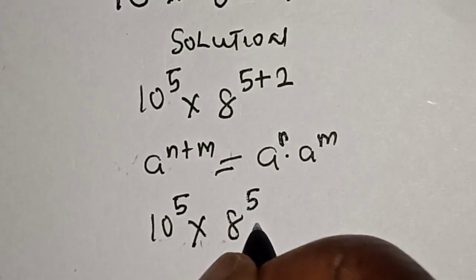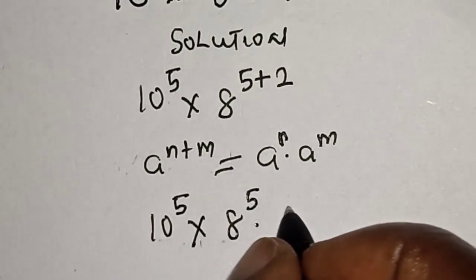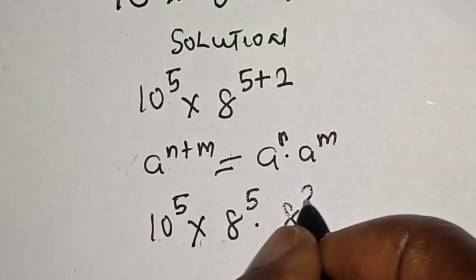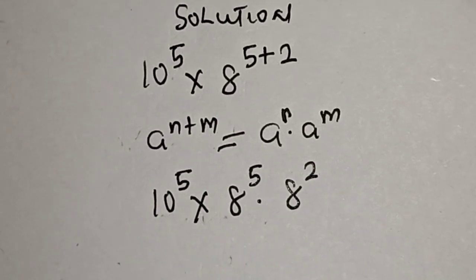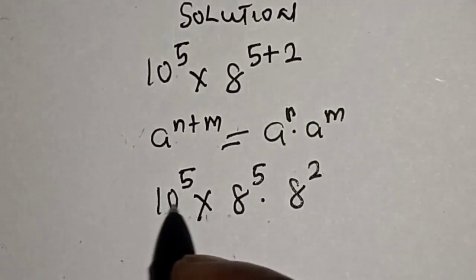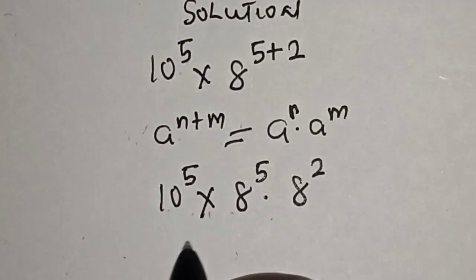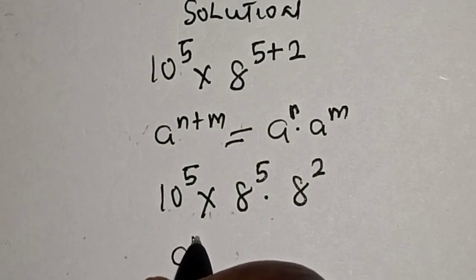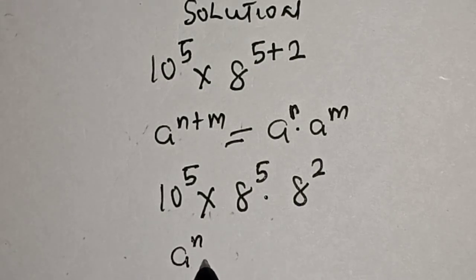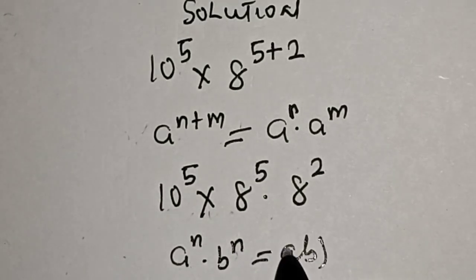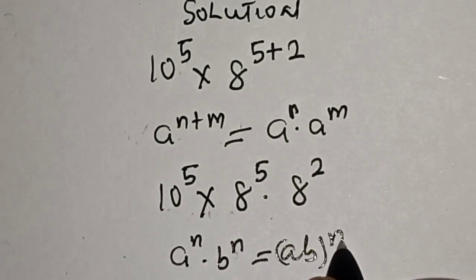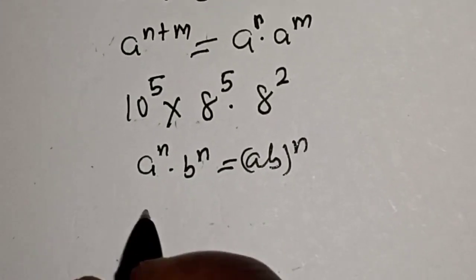Now from here, if you have a raised to power n multiplied by b raised to power n, this is equal to a·b raised to power n. Applying this rule, we get 10 multiplied by 8 raised to power 5, then multiplied by 8 raised to power 2.